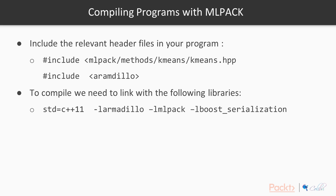So how do we compile our program? We need to include our relevant header files, and also Armadillo and Boost where we're using them. A lot of the MLPack files will include Boost where it's relevant and necessary. To compile, we need to link with C++11 — that's the standard now — and we'll also need to link with Armadillo, Boost, and MLPack. If you're using GCC or Clang you can just link in the standard way, and if you're using CMake you'll need to use `find_package` and then `target_link_libraries`.